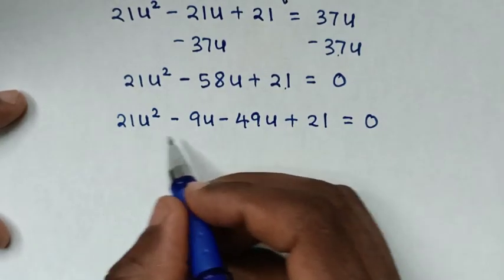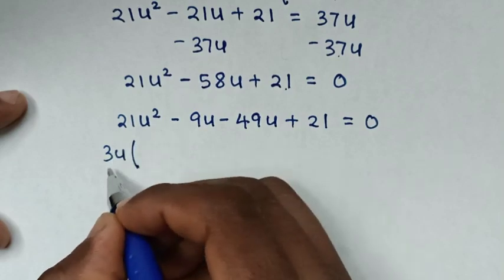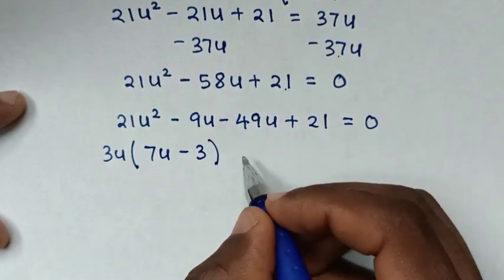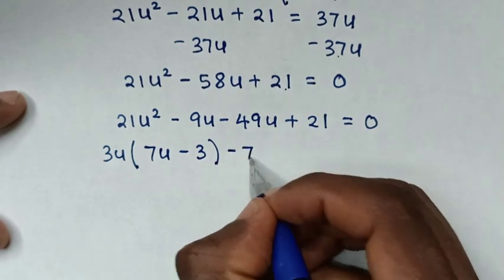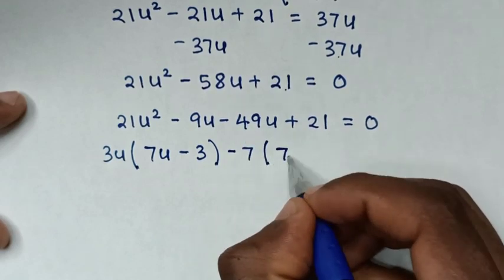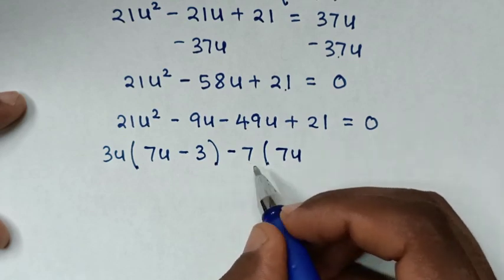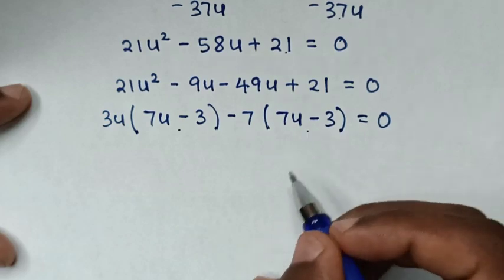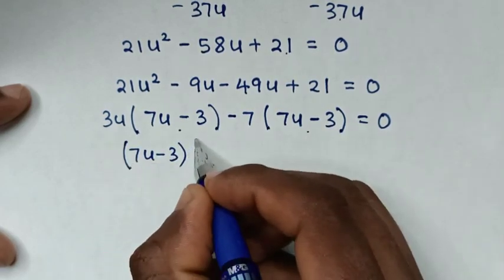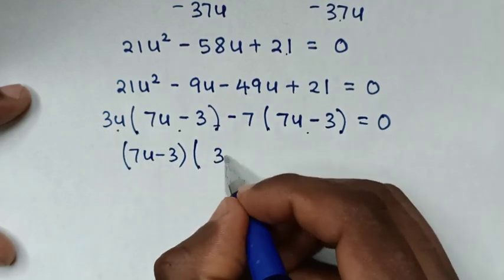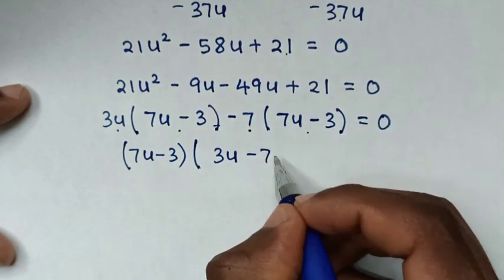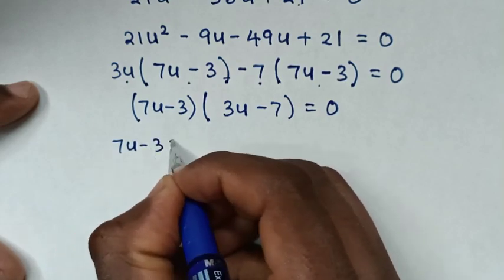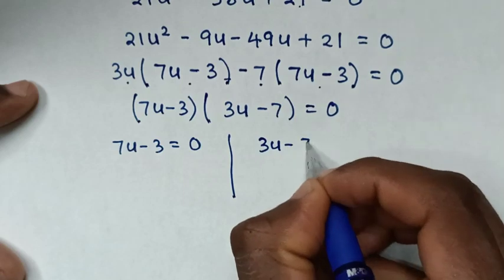Then we solve this quadratic equation by grouping and factorization. So it will be 21u squared, and negative 58u is split as negative 9u minus 49u, then plus 21 is equal to 0. From here 3u is common, so take 3u out of bracket: 7u minus 3. Then in the second group, take negative 7 out: giving 7u minus 3. Then (7u minus 3) is common, so take it out: (7u minus 3)(3u minus 7) is equal to 0.